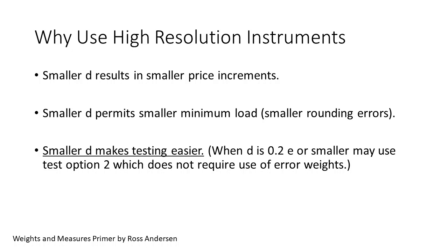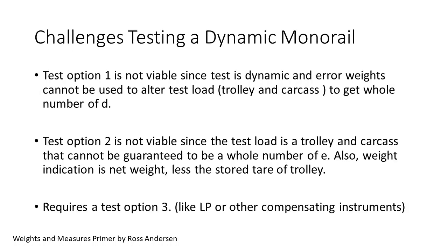Going back to my three reasons to use high resolution, we find that the first two do not apply to the dynamic monorail. One-pound divisions seem to be fine for these commodities regarding price increments, and these instruments are not used in the very low end of their weighing range. The sole reason they are high resolution is to make testing easier, or rather to make testing possible.